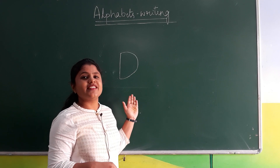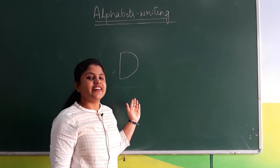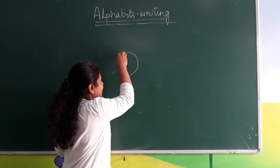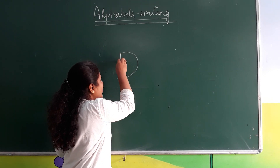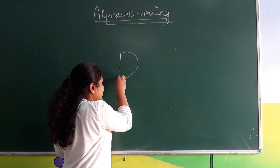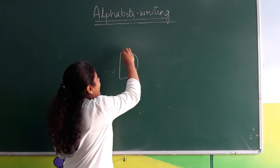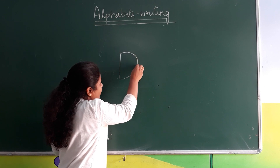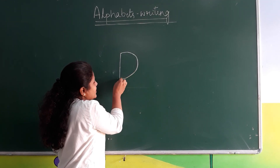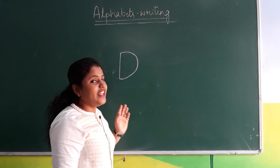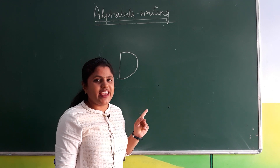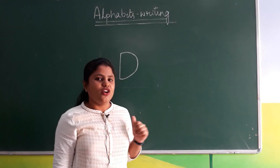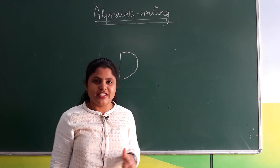Which letter is this? Letter D. Which letter? D. One standing line and curve — which letter is this? D. All of you got this? How to write letter D. All of you have enjoyed the letter D.